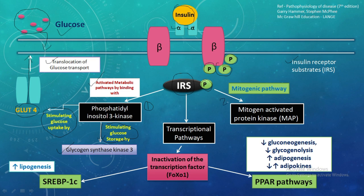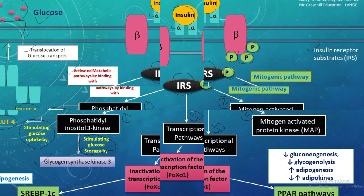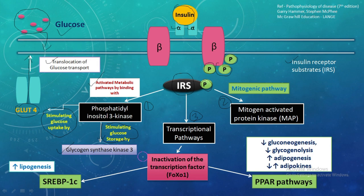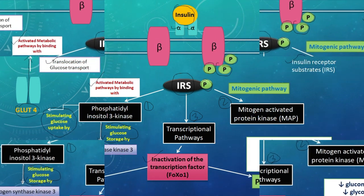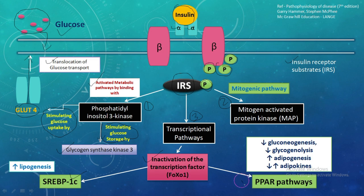The second important pathway activated is the mitogen-activated protein kinase (MAPK) pathway, which is also linked at the cell membrane. The third important pathway is the transcriptional pathway, in which there is inactivation of transcription factors associated with activation of the SREBP1C and PPAR pathways. SREBP1C is linked with a rise in lipogenesis, while the PPAR pathway is linked with decrease in gluconeogenesis, decrease in glycogenolysis, increase in adipogenesis, and fluctuation in adipokine levels.